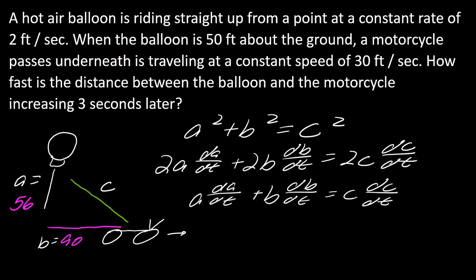To figure out c, now I'm just going to use the Pythagorean theorem. I've got 56 squared plus 90 squared equals c squared. If I go ahead and solve that, this comes out to